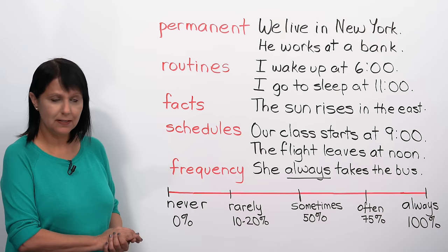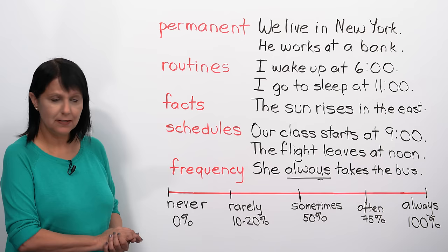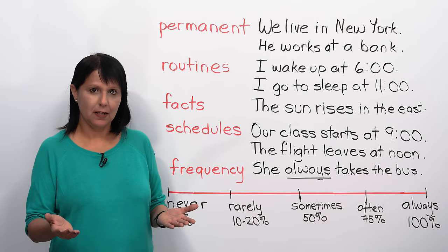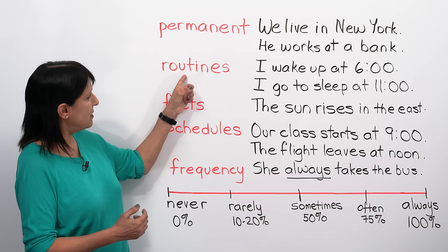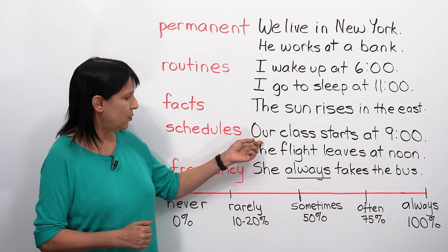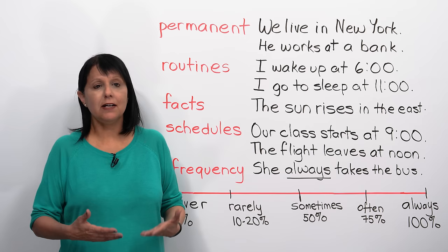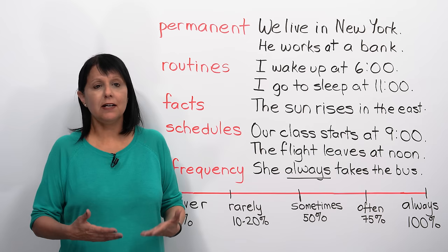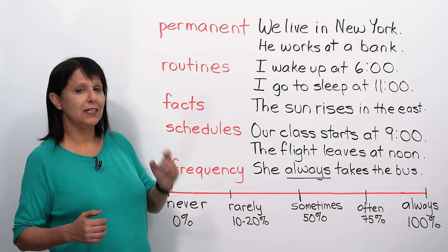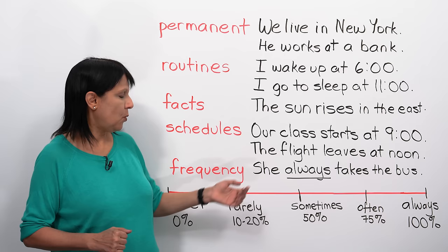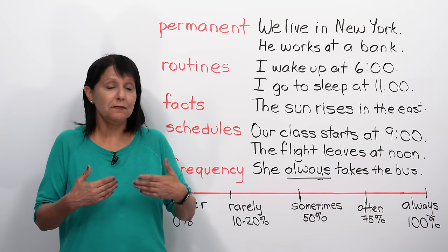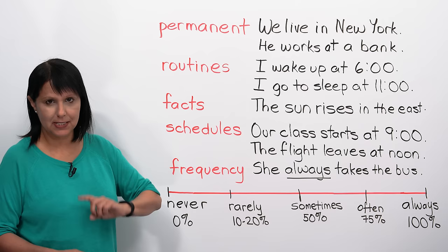Next, we can use this tense to talk about schedules. A schedule tells us when something is going to happen, and that's connected to routines - it's a regularly scheduled event. For example, we could say our class starts at nine o'clock, because our class always starts at nine o'clock. It's kind of permanent, it's kind of a routine, it's a schedule. Or the flight leaves at noon - not just this time, but the flight always leaves at noon. It has a schedule, and therefore we use the present simple tense with words like starts and leaves.